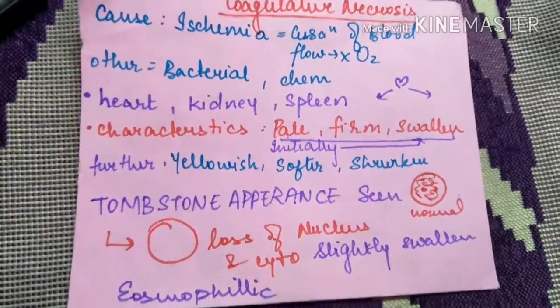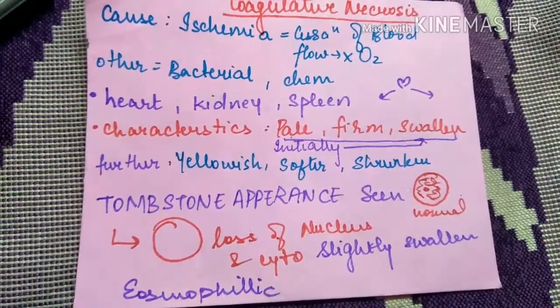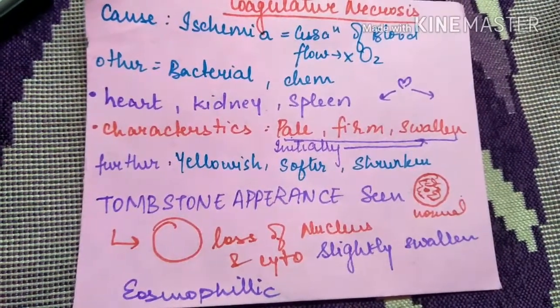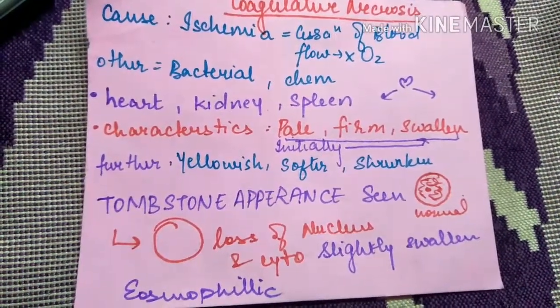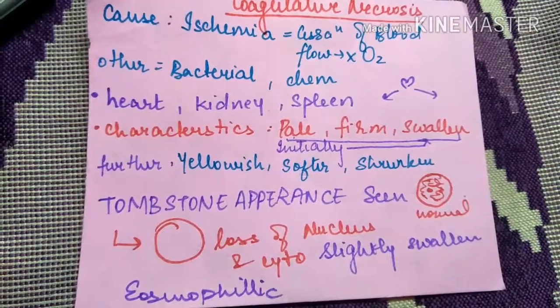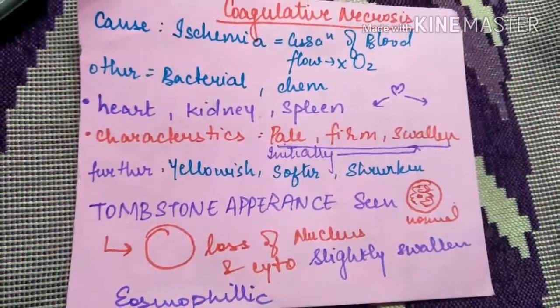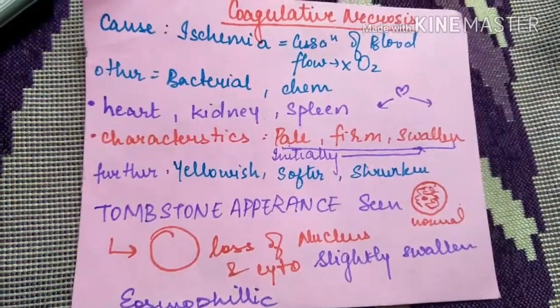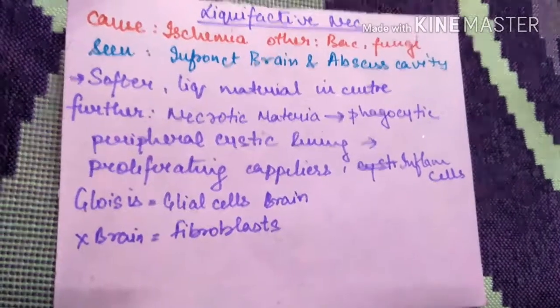In coagulative necrosis, there is a loss of nucleus and the cytoplasm is slightly swollen and eosinophilic. There is no degradation of the cell.